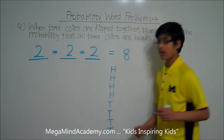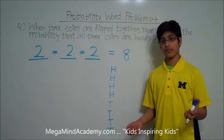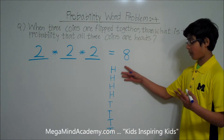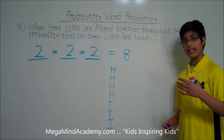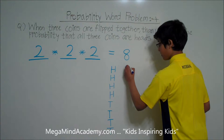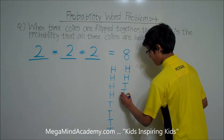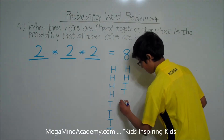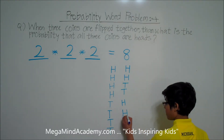For coin two, there's an equal chance of getting heads or tails. But this time, instead of dividing by two and getting four and four, we get two heads, two tails, two heads, and two tails.